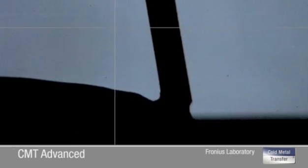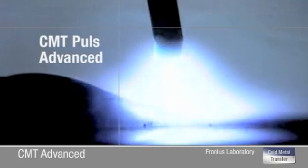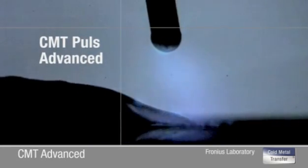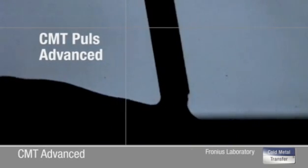Combined with positively charged pulsing cycles, the process makes it possible to join super high-strength steels with complete process reliability. That's CMT Pulse Advanced.